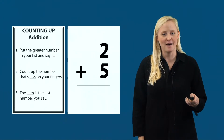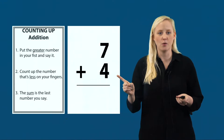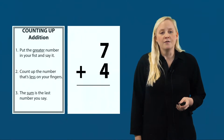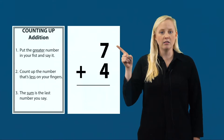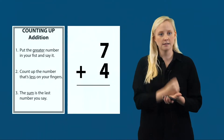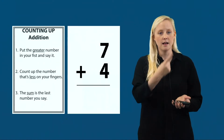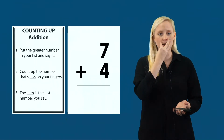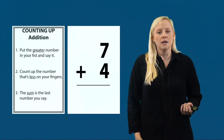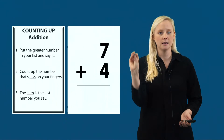Let's try another addition math fact flashcard. This problem says seven plus four. I'm going to use my exact same steps. Step one: put the number that's greater in your fist and say it. Seven is greater, so I put seven in my fist and say it: seven. Then I count up the number that's less, which is four: seven, eight, nine, ten, eleven. The sum is the last number I said — eleven. If we were to work this problem fluently it would look like this: seven, eight, nine, ten, eleven. Our sum is eleven.